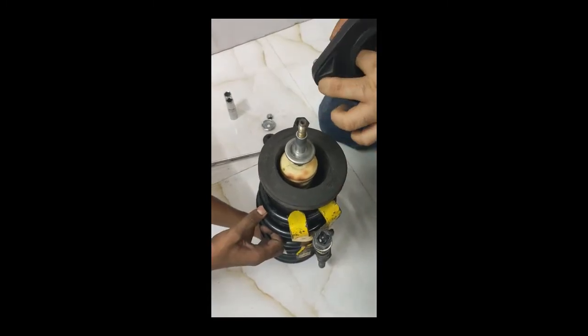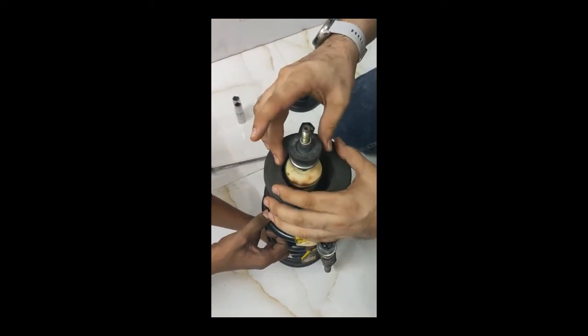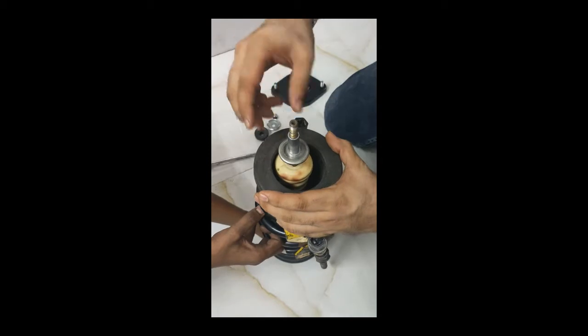There is another rubber which sometimes gets stuck in the mount. This has to be placed like this. Remove this and remove the washer.